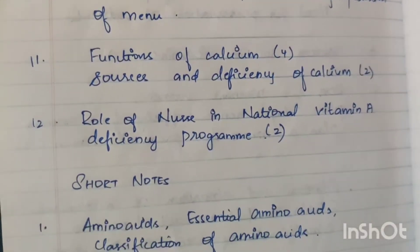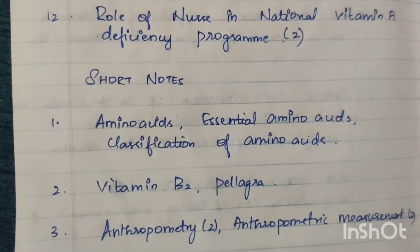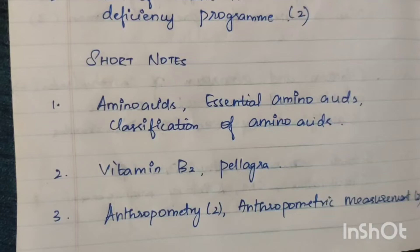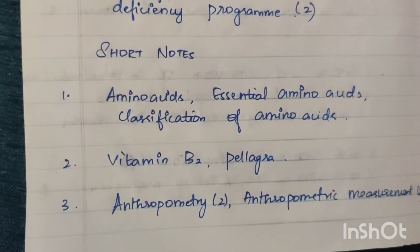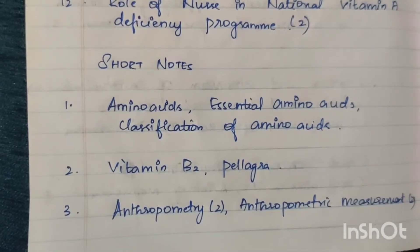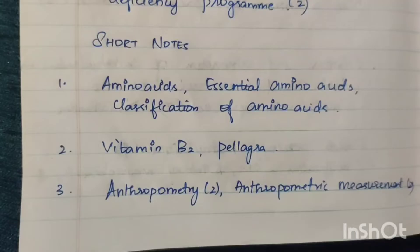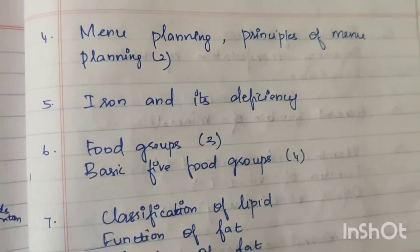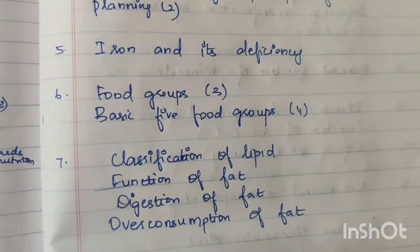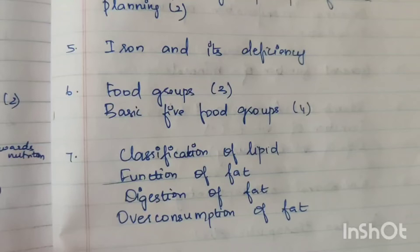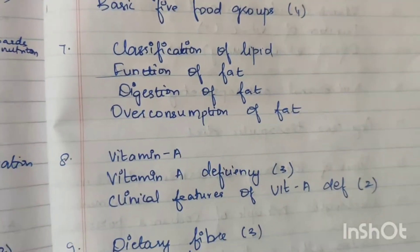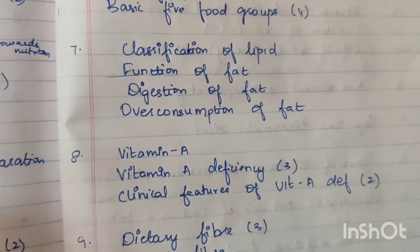Overall, 15 marks questions are all covered. Next 5-mark topics: essential amino acids, classification of amino acids — if you cover amino acids, these 15-mark questions can be answered easily. Next: Vitamin B2, Vitamin B pellagra. Anthropometric measurement — 2 times. Menu planning and principles of menu planning — 2 times. Iron deficiency — 1 question. Food groups — 3 times. Basic five food groups — 4 times; this is very important. Classification of lipids, function of fat, digestion of fat, overconsumption of fat — each 1 time.